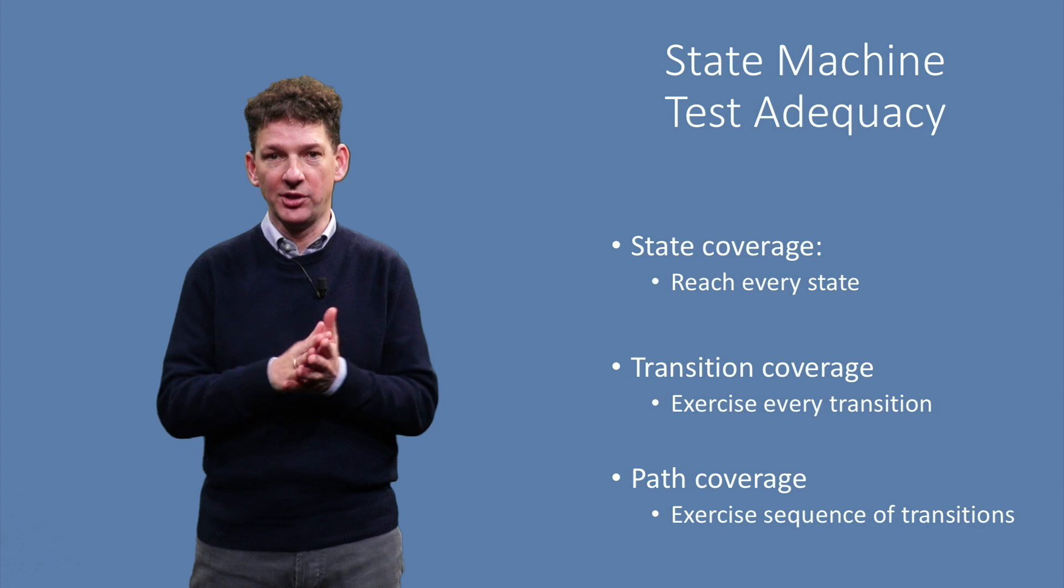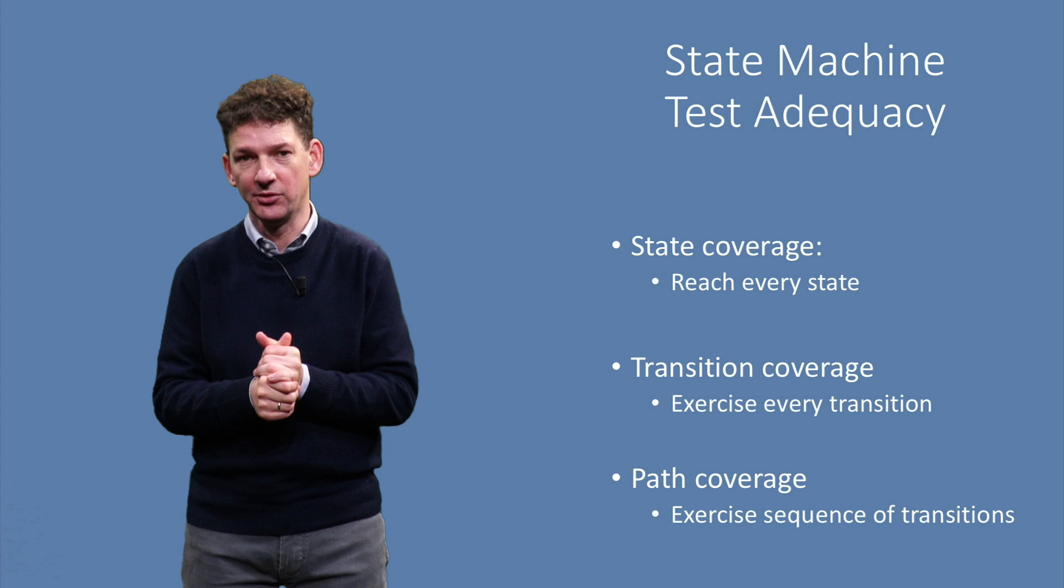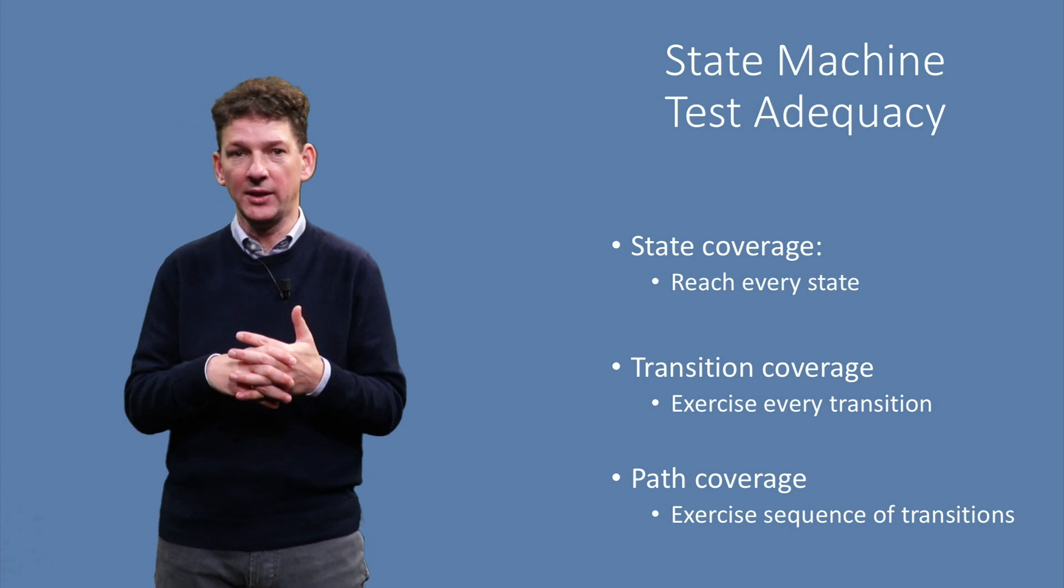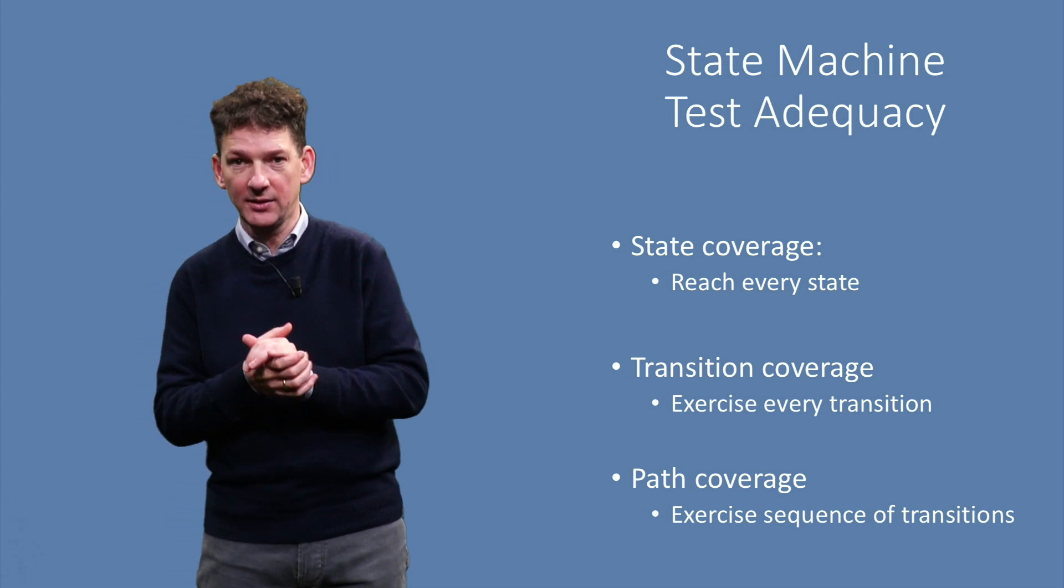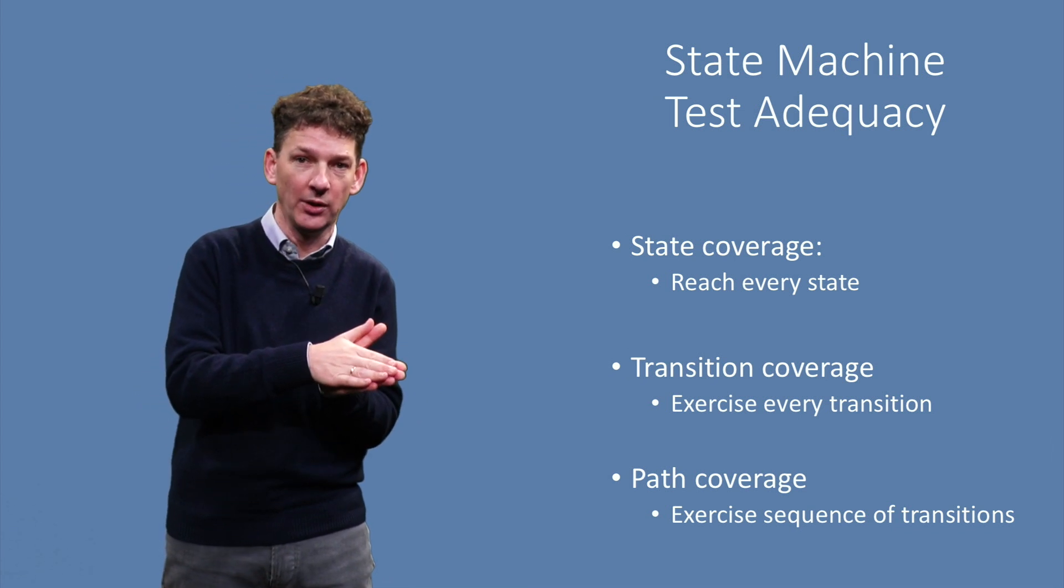Besides individual transitions, we can also test sequences of transitions, which are paths through the state machine. State machines very often have loops. In that case there are infinitely many possible paths, since we can take the loop as often as we want,